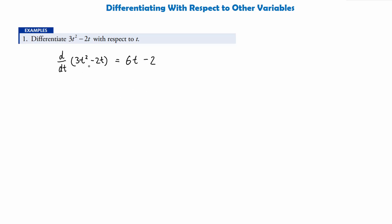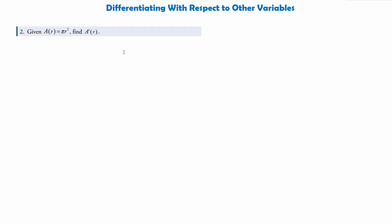And this is differentiating an expression with respect to a different variable. Now here is our next example. We are given a function capital A with variable r, equals pi r squared. So it looks like this is the area of a circle in terms of r, which is the radius. And we are told to find A dashed r — so this is the derivative. Whatever is in brackets here is what we are differentiating with respect to.